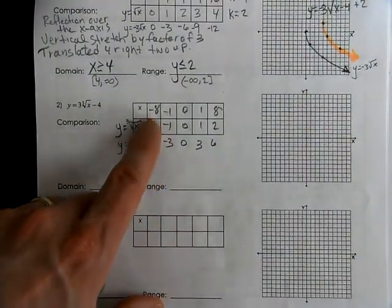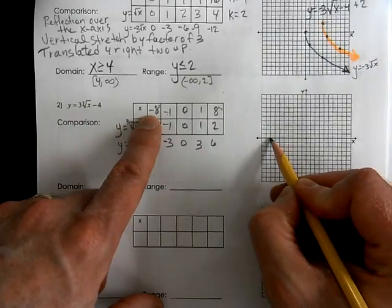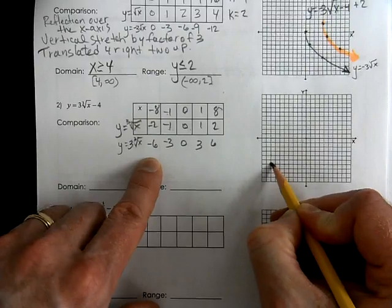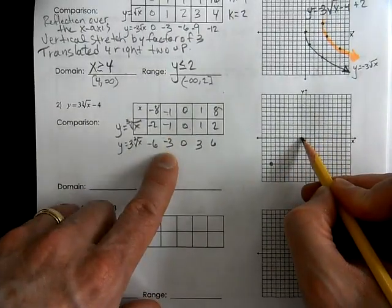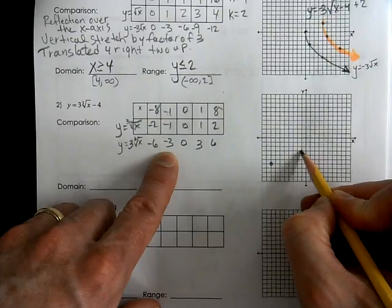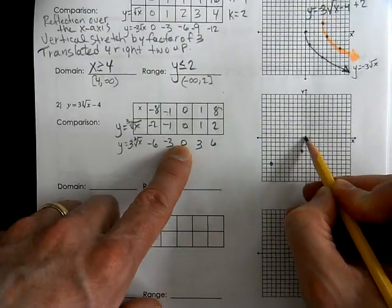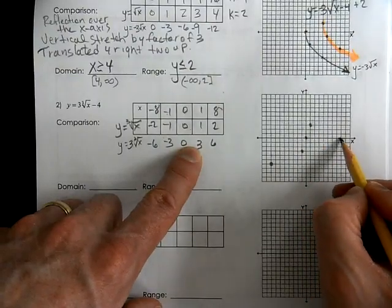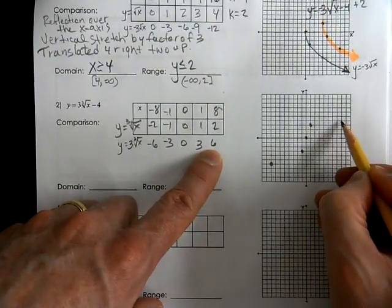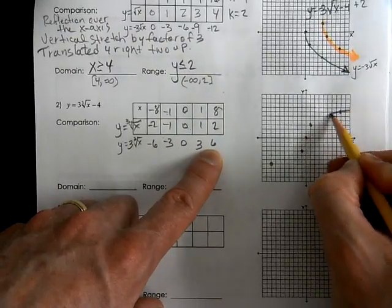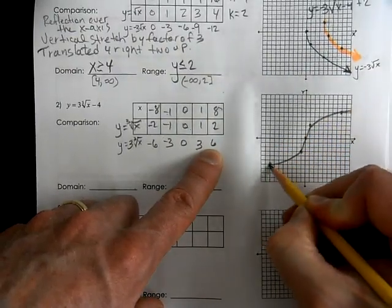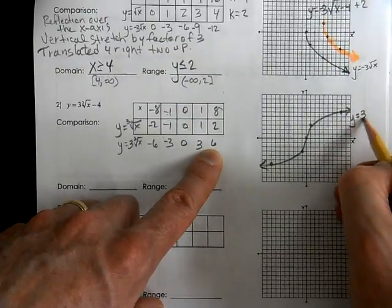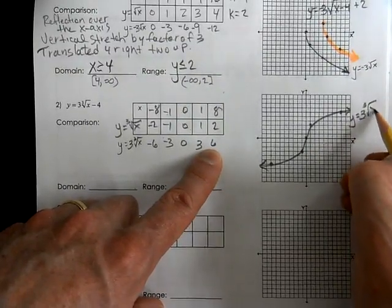And that I can graph. At negative 8, I'm down at negative 6. At negative 1, I'm down at negative 3. At 0, I'm at 0. At 1, I'm at 3. And at 8, I'm up at 6. And that is y equals 3 times the cube root of x.